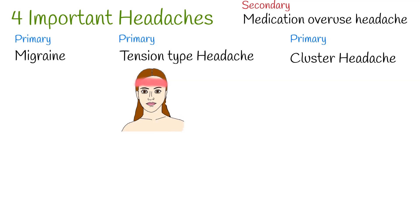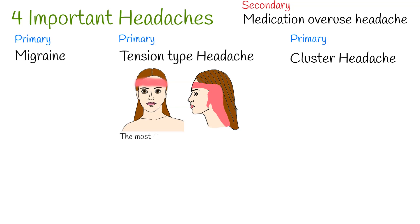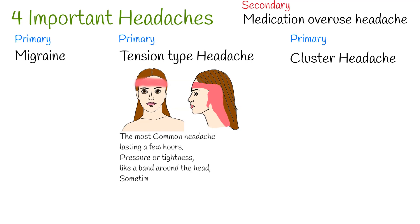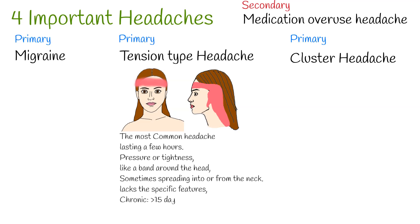Tension-type headache is the normal or ordinary headache and is the most common type, accounting for up to 80% of cases. It occurs in attack-like episodes, mostly lasting a few hours. The headache is often described as pressure or tightness, like a band around the head, sometimes spreading into or from the neck. It lacks specific features, affects both parts of the head, and is not a pulsating type.